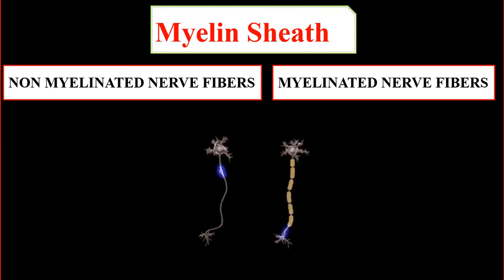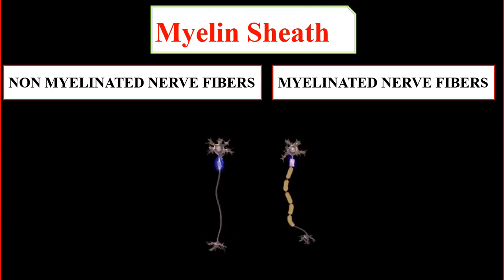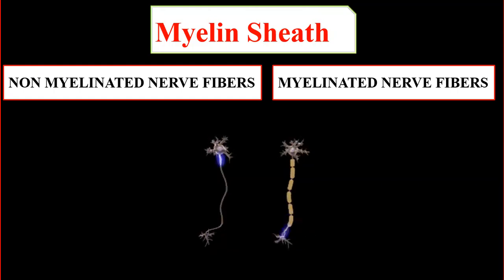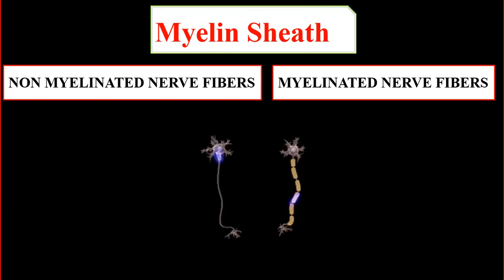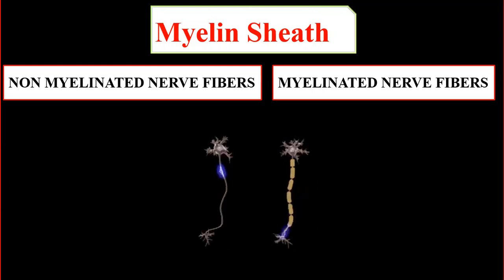So what are some differences between these two types of nerve fibers? These differences are on the basis of structure, and these structural differences also affect their functions.